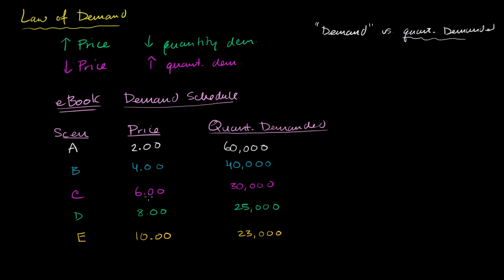So this relationship, this shows the law of demand right over here. And this table that shows how the quantity demanded relates to price and vice versa, this is what we call a demand schedule. Now we can also, based on this demand schedule, draw a demand curve.